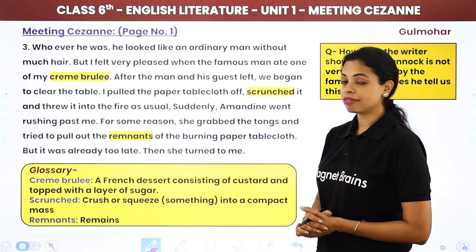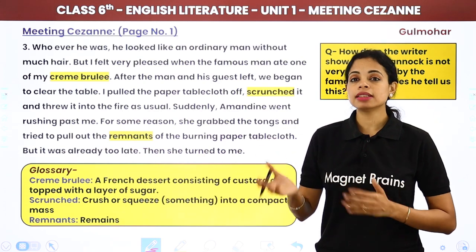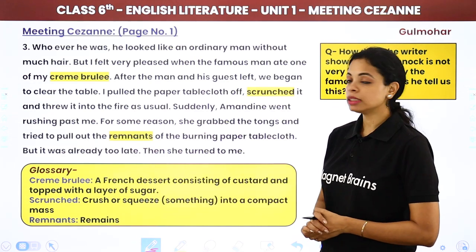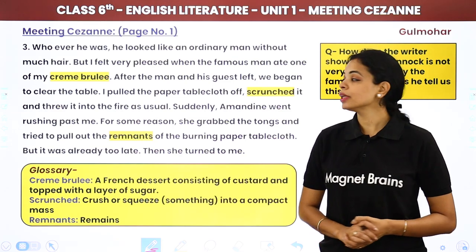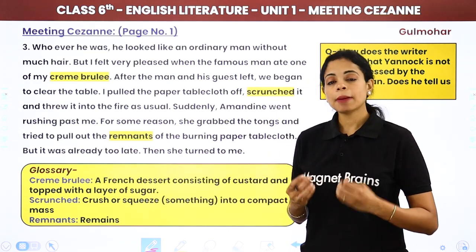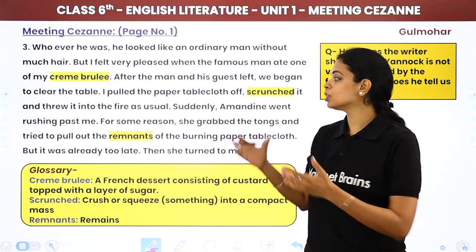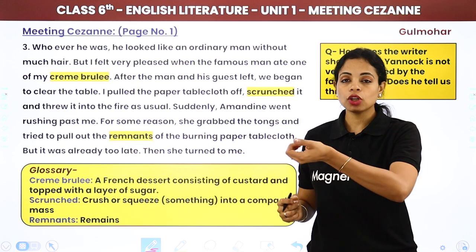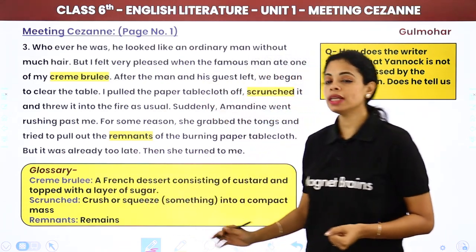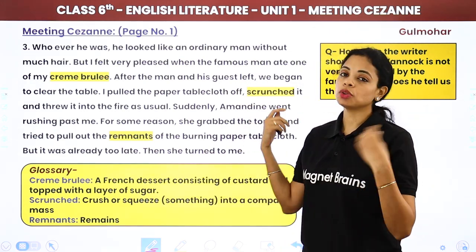After the man and his guests left, they began to clear the table. Yannick pulled the paper tablecloth off, scrunched it — meaning crushed it into a compact mass — and threw it into the fire as usual. 'Scrunch' means to crush or squeeze into a compact mass.